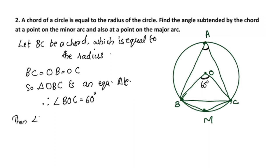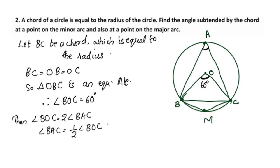Then angle BOC equals 2 times angle BAC. Angle BOC is 60 degrees, since triangle OBC is equilateral. So angle BAC is equal to half of angle BOC, which is 30 degrees. This relates to the minor arc and major arc.